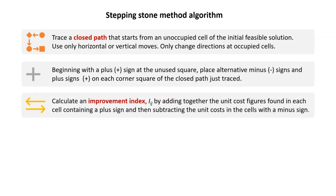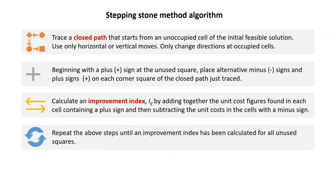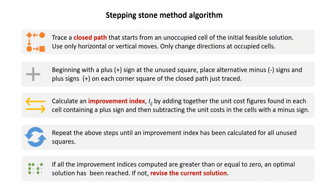These plus and minus signs are then used to compute the improvement index. To calculate the improvement index, you add the unit costs with their signs for each closed path. You repeat this for all the other unoccupied cells. Then, for the current allocation, you check if all the improvement indices are greater than or equal to zero. If they are all greater than or equal to zero, then the current allocation is optimal and you have your optimal solution.